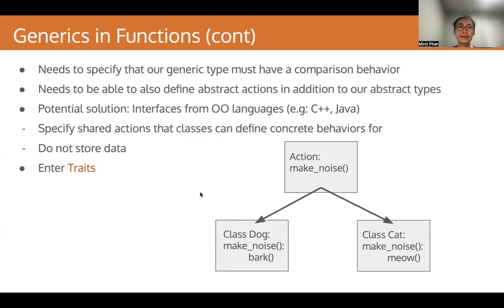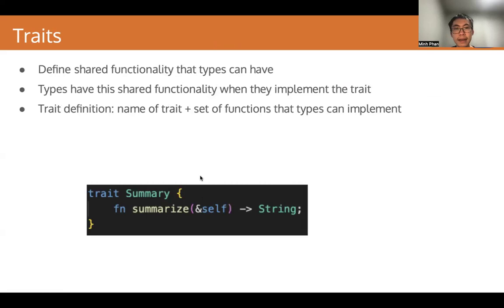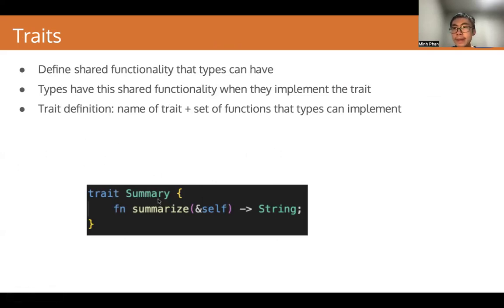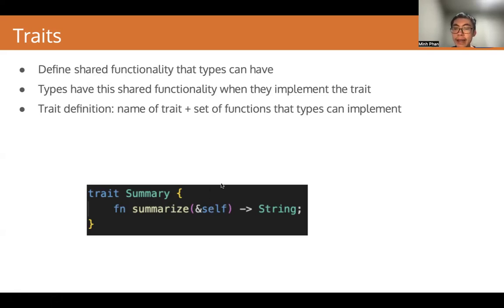That's why we have traits. Traits, much like interfaces, define shared functionality that types can have. Types have this shared functionality when they implement the trait. Here is an example of a trait. In the trait definition, you declare the name of the trait and then the set of functions that types must implement. Here we have the function summarize that types can define concrete behavior for. Note that this function doesn't have a function body — that's because the trait doesn't need to define it. The types that implement the trait will need to define it.